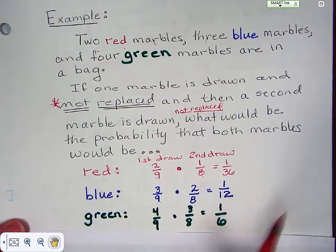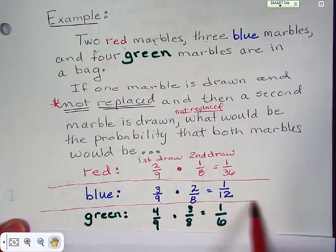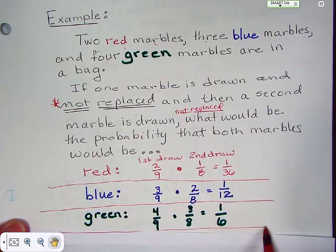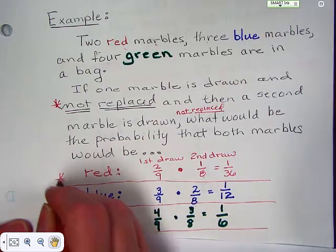Now, these are separate events. First one, we're just looking for red. Second one, we're just looking for blue. Last one, we were just looking for green. You would only do this one at a time.